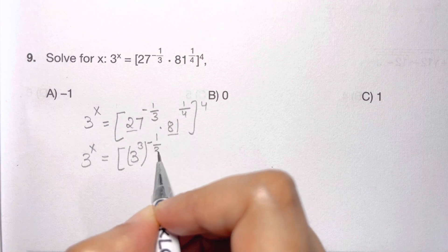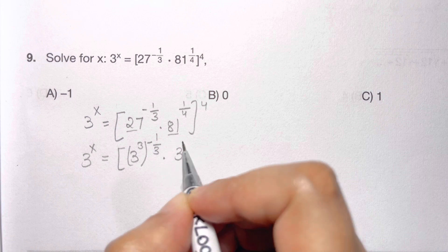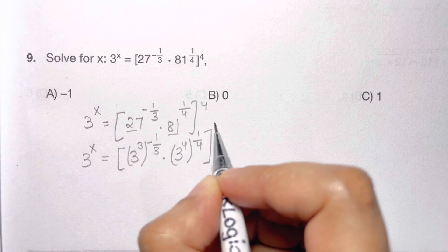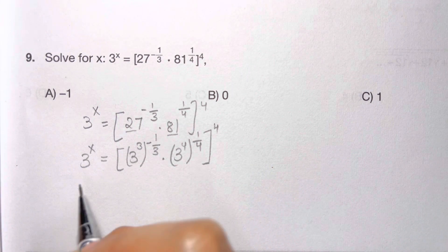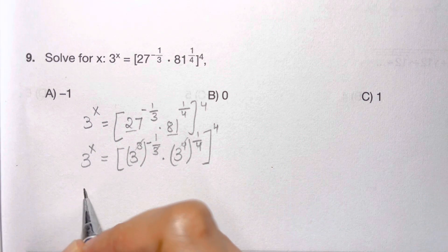Times 81 can be written as 3 to the power of 4, whole to the power of one-fourth, then we have whole to the power of 4. Now as you can see in this step, I can cancel out 3s and 3s, 4s and 4s.